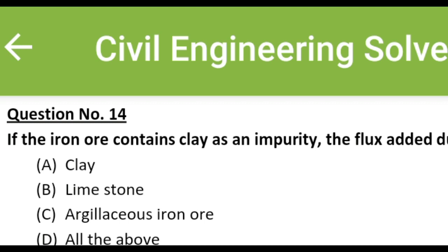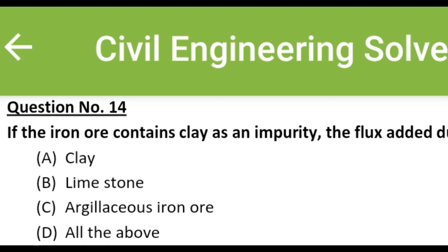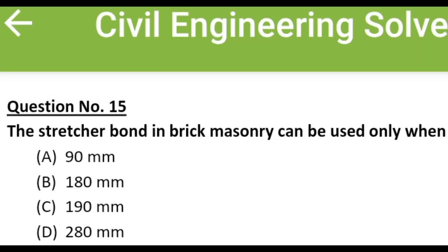If the iron ore contains clay as an impurity, the flux added during calcination is: Option A: clay, Option B: limestone, Option C: argillaceous iron ore, Option D: all of the above. The correct answer is Option B: limestone. The structure bond in brick masonry can be used only when the thickness of wall is: Option A: 90 mm, Option B: 180 mm, Option C: 190 mm, Option D: 280 mm. The correct answer is Option A: 90 mm.